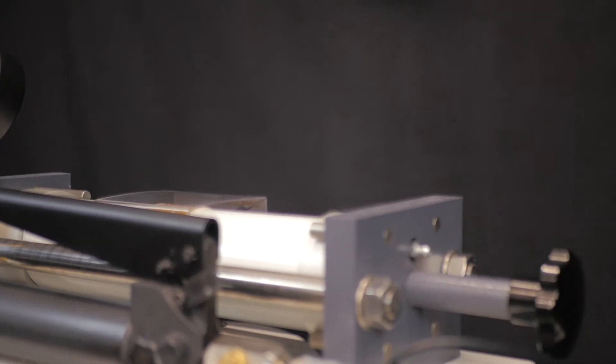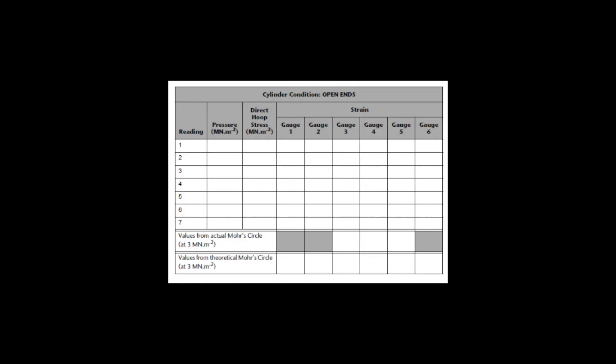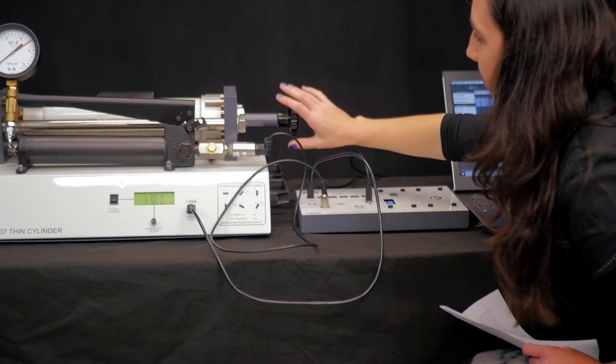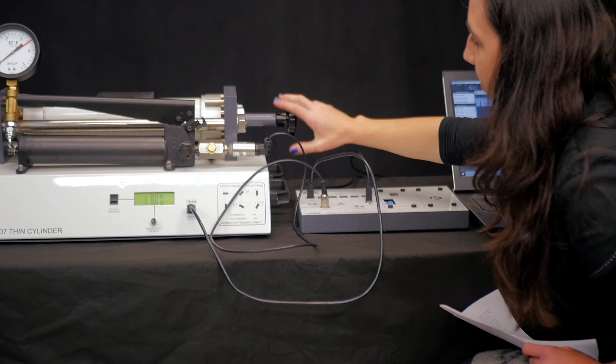First up, we create a blank table ready to input results like this shown in the user guide. You might instead use the table function within VDAS to gather and record your results. Then we switch the power on the thin cylinder apparatus and wait five minutes. This allows the strain gauges to reach a stable temperature that will result in more accurate data. Now we're going to change the pressure and turn the hand wheel to open up the cylinder, moving the pistons inside.